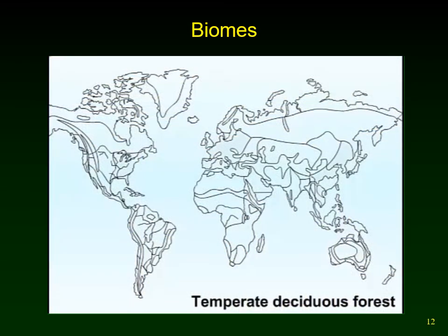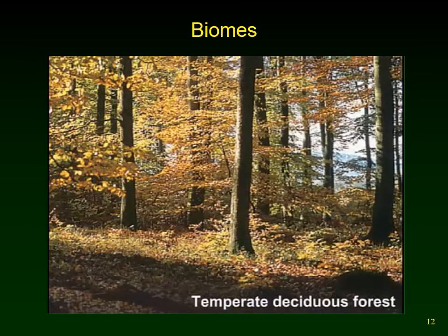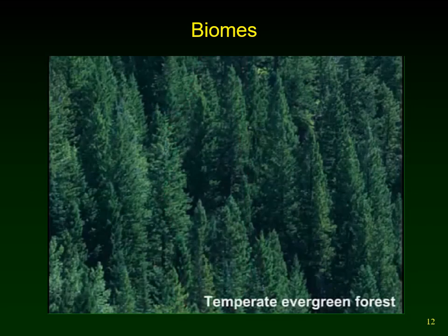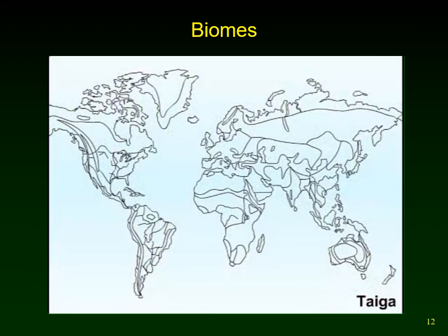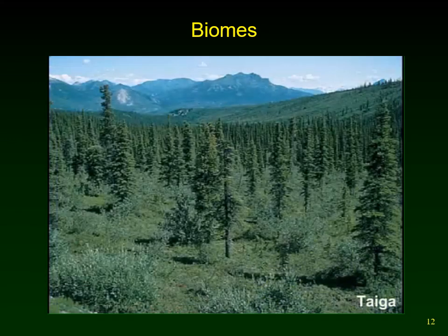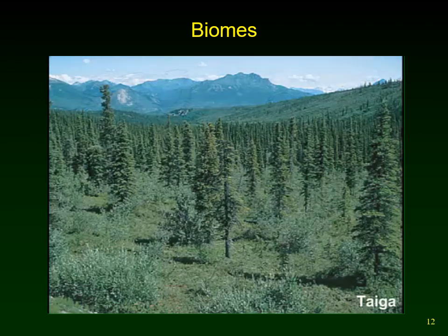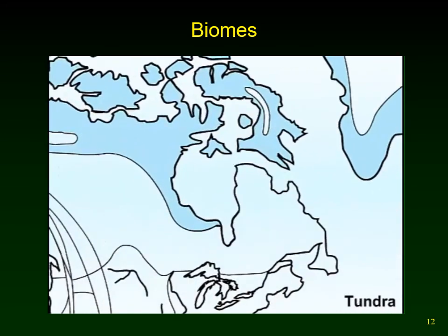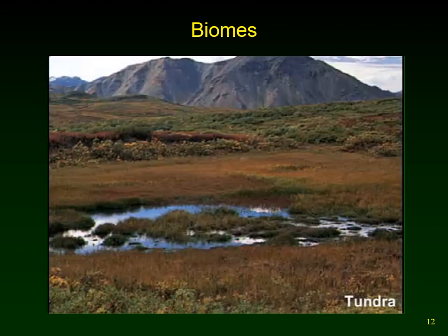Savannas are often inhabited by huge herds of grazing animals that migrate with the seasons. Deserts receive less than 25 centimeters of rain per year; vegetation is sparse and survival depends on water conservation. Temperate grasslands are found halfway between the equator and poles and are characterized by fertile soil. Temperate deciduous forests occur in regions with warm summers, cool winters, and plenty of rain — dominant trees include oak, maple, ash, and hickory. Temperate evergreen forests occur where winters are cold with a strong seasonal dry period.